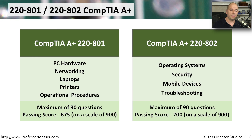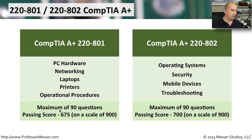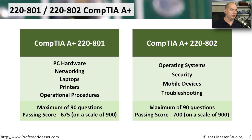To get the CompTIA A-plus certification, you need to pass two separate exams. The first is the 220-801, which covers PC hardware, networking, laptops, printers, and operational procedures. There are a maximum of 90 questions on the exam, though you may be asked fewer. The passing score is 675 on a scale of 900. CompTIA doesn't explain exactly what their scale means, but what we've found is that each question is worth a different number of points, so you can't apply a simple percentage. You need to reach at least 675 points to pass the 220-801 exam.